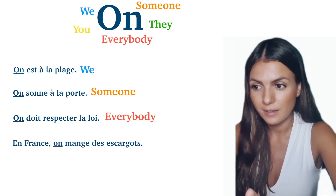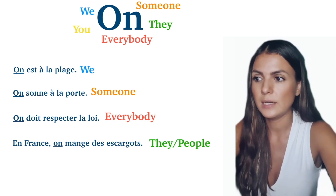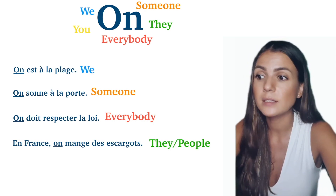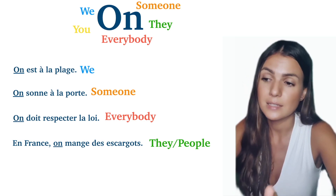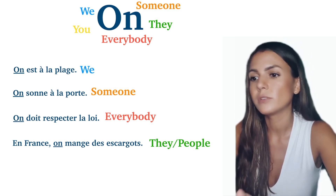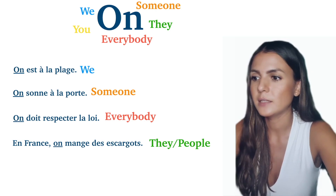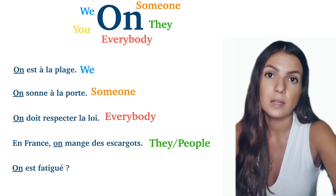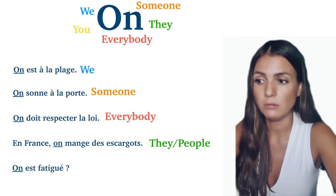If there is no special context, 'on' will mean 'people'. For example, 'en France on mange des escargots' — in France people eat snails, in France they eat snails.